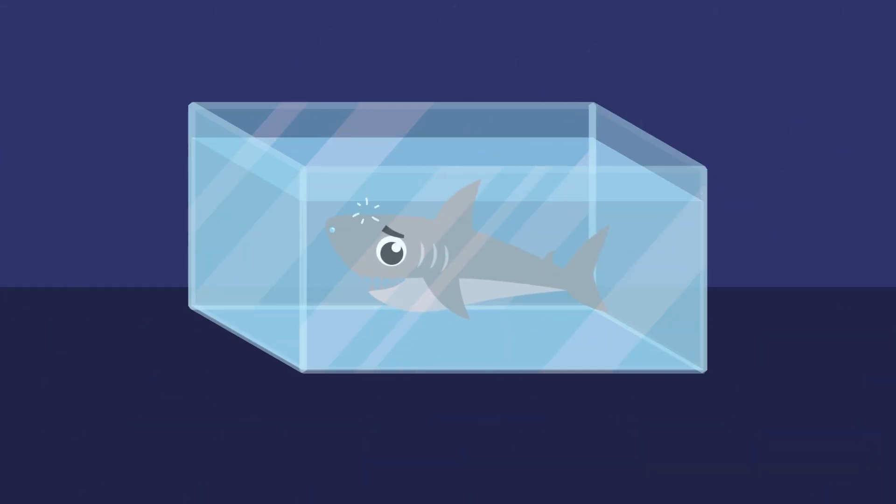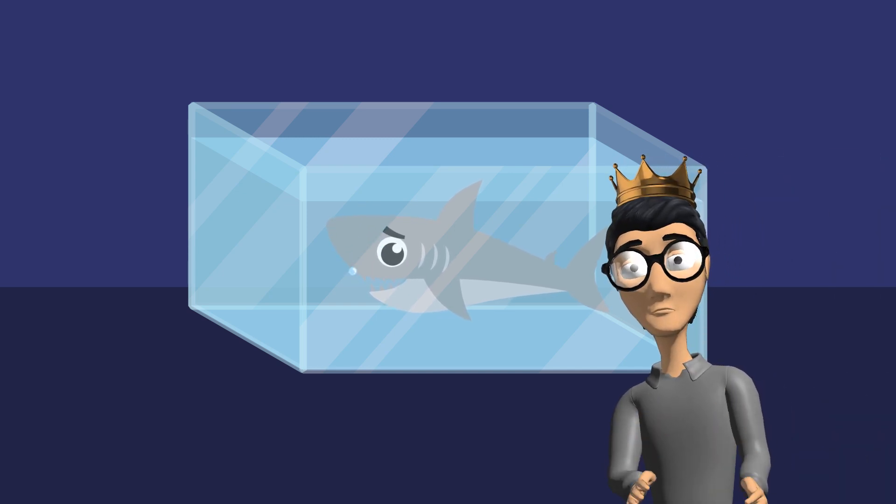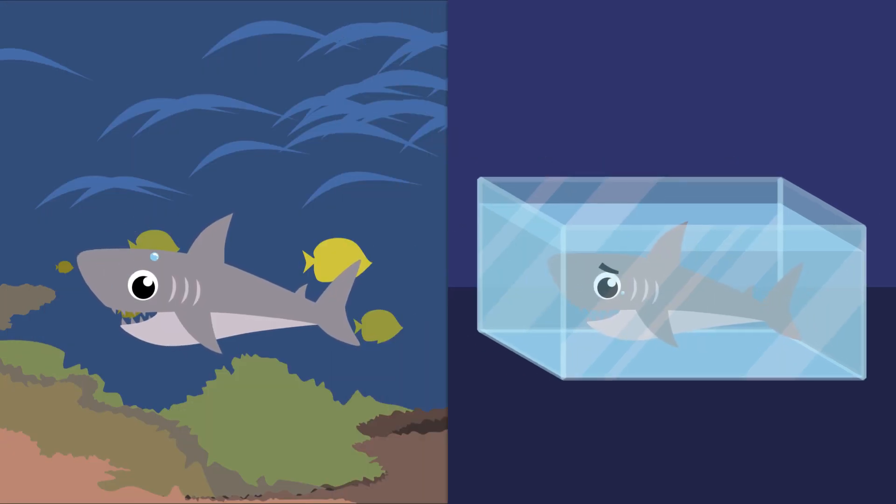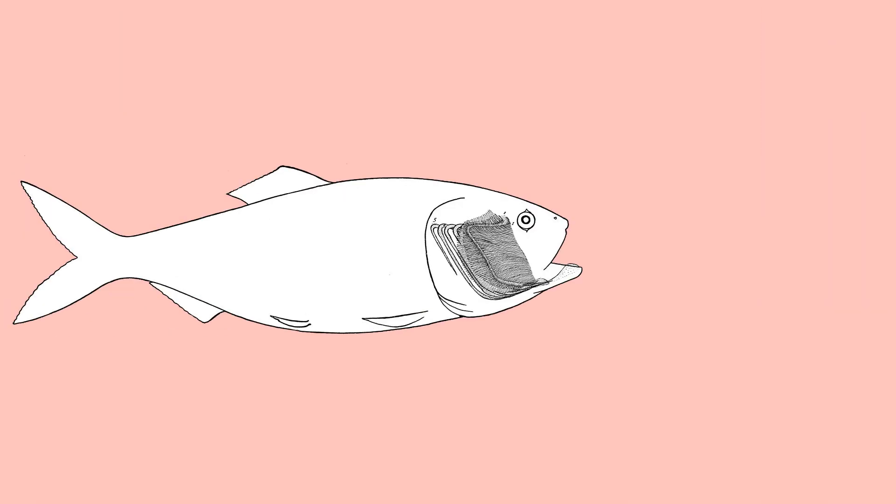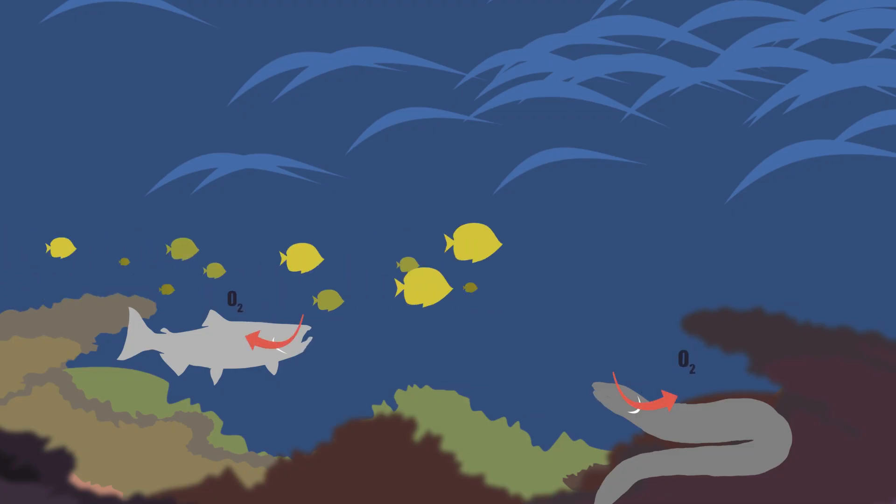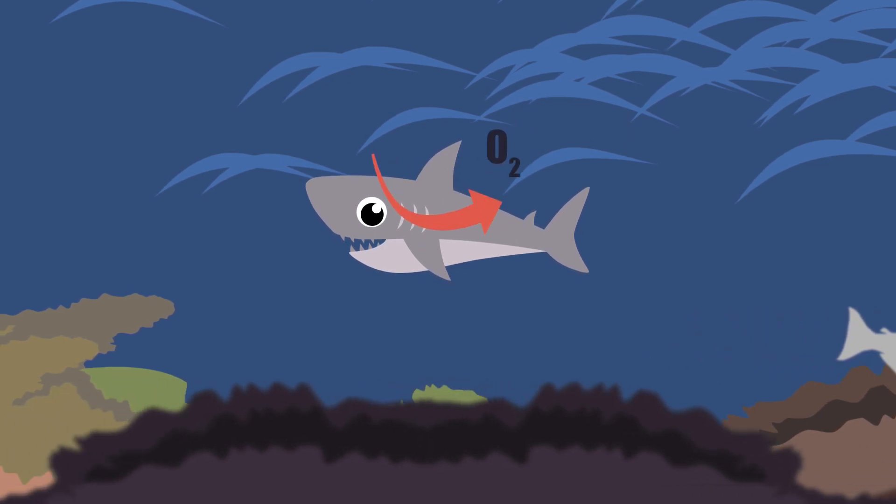Of course, keeping a great white healthy in an aquarium is hard enough, but it's not the only or even the hardest part of keeping these powerful sharks in captivity. Just getting the shark from the ocean to the tank is a colossal challenge. You see, in order to breathe, fish need a constant flow of oxygen-rich water over their gills. Many fish and other sea creatures like eels accomplish this by simply opening and closing their mouths to sort of pump water through. They don't need to be moving to stay alive.